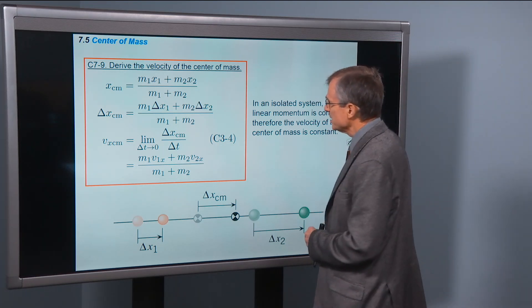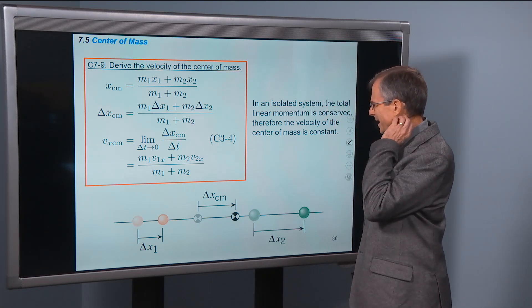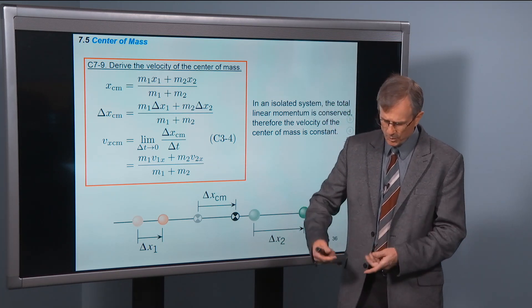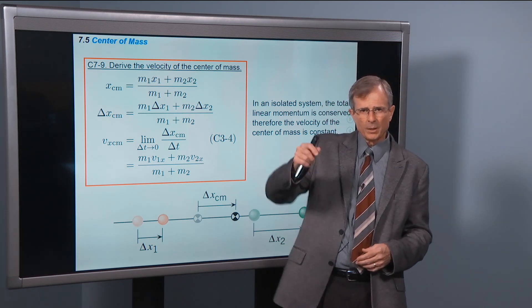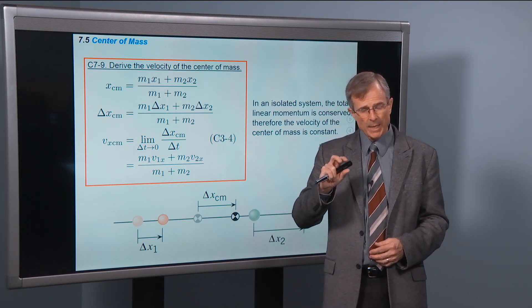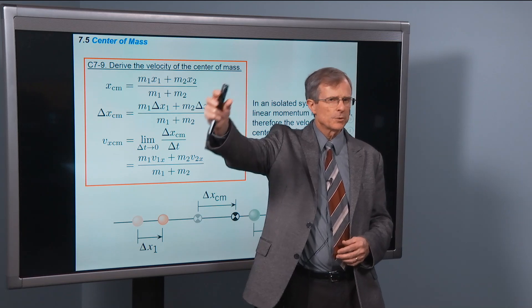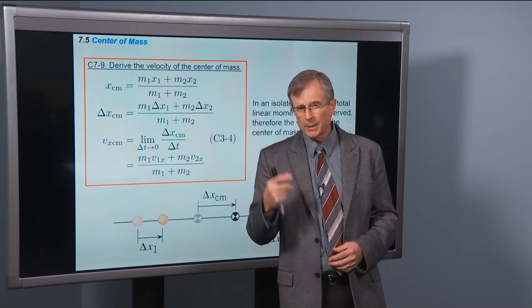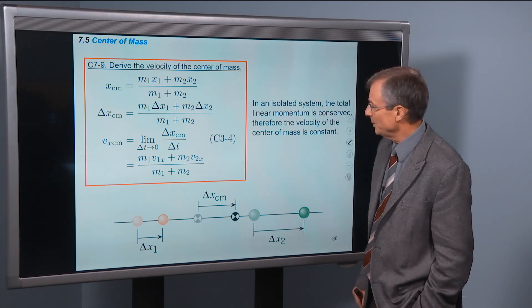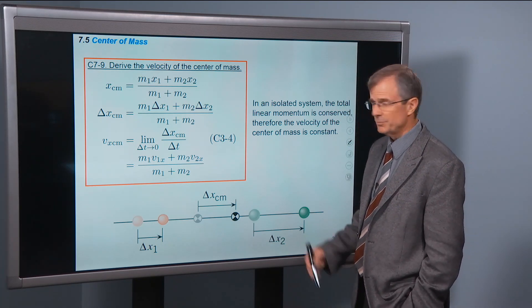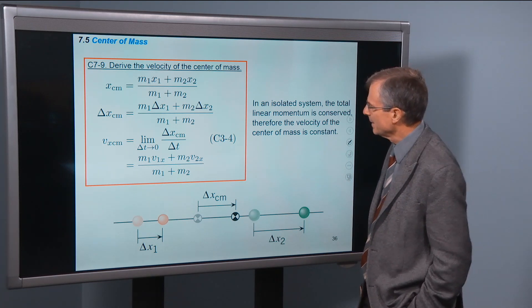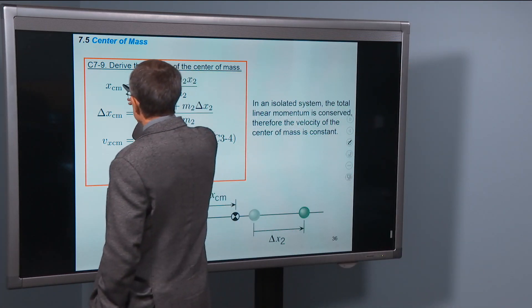Finally, I derive the velocity of the center of mass. Like in the demo, we showed the foam ball that was spinning, but its center, that red dot, just did a nice smooth trajectory. How do we find that velocity of the center of mass? This is a derivation. I'm asking you to be able to put this together, but you all can based on your knowledge of the earlier concepts.